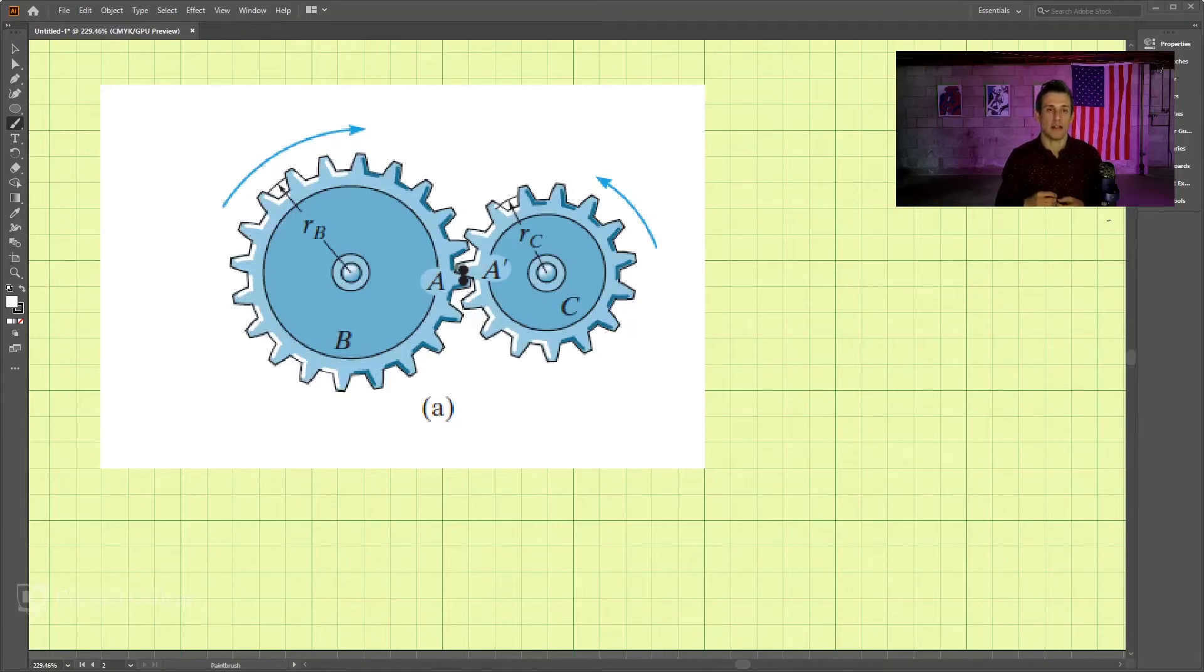Let's examine rotating bodies in contact with each other. Gears are a specific case of this, but it's a common case that we encounter in engineering quite a bit.